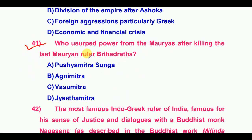Who seized power from the Mauryas after killing the last Mauryan ruler? The answer is option A: Pushyamitra Shunga.